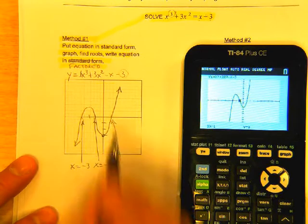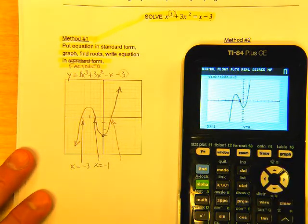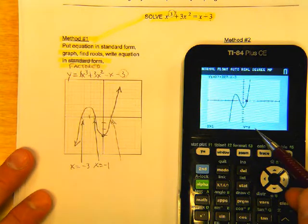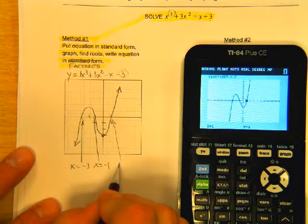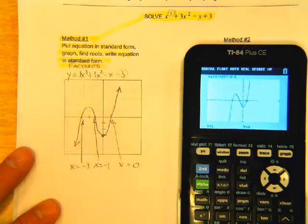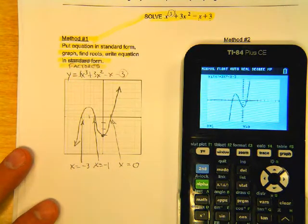And that one looks like 1. So trace, 1, enter. We get y is 0. And so three rational roots, and there we are.